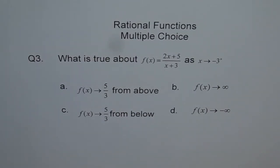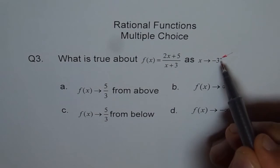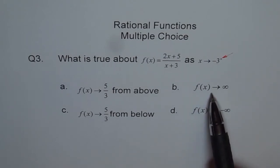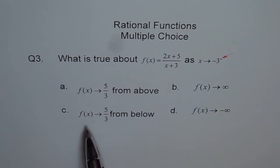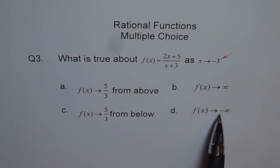Question 3. What is true about f of x equals 2x plus 5 divided by x plus 3, as x approaches minus 3 from the positive side? There are 4 choices: A) f of x approaches 5 over 3 from above; B) f of x approaches infinity; C) f of x approaches 5 over 3 from below; D) f of x approaches minus infinity.